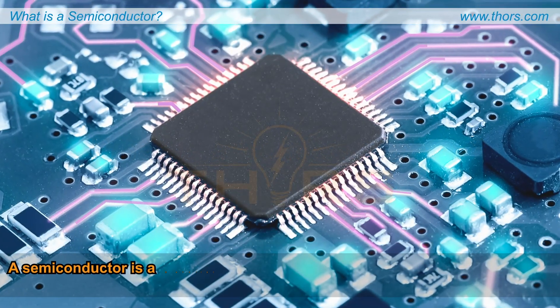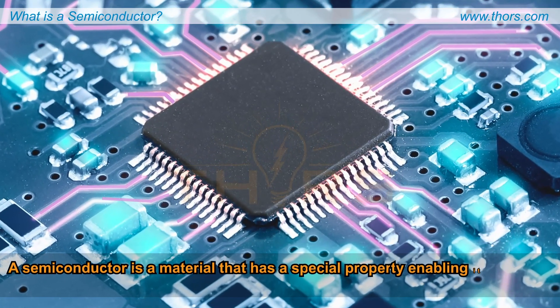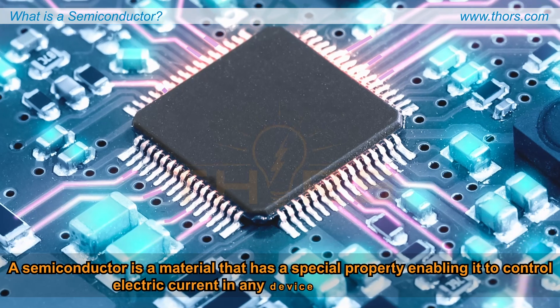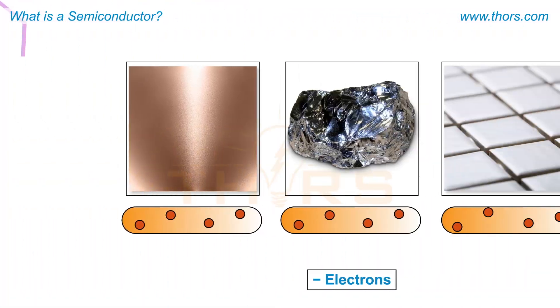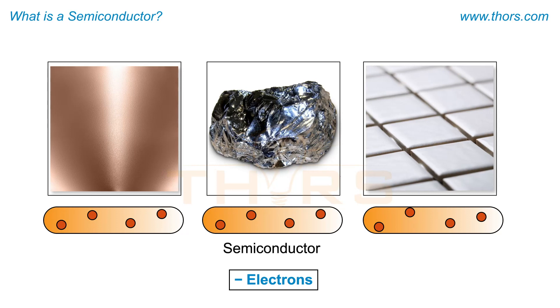A semiconductor is a material that has a special property enabling it to control electric current in any device in which it is used. A semiconductor such as silicon can conduct current like a conductor such as copper.